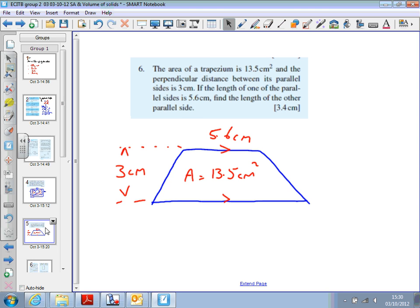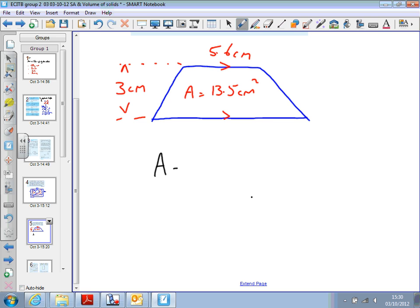And the formula for the area of a trapezium is 1/2(A + B) times the perpendicular height. Well, I know the perpendicular height. A and B are the two sides. So, this is A and this is B. So, I'm actually after B.